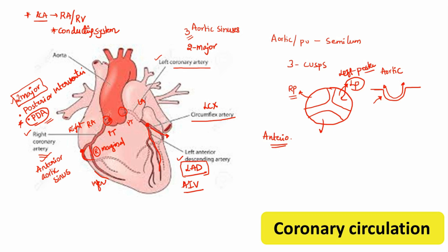The left coronary artery mainly supplies the left atrium and the major part of the left ventricle. Regarding the conducting system, in 40% of cases the sinoatrial (SA) node is supplied by the left coronary artery. Additionally, the left bundle of His — the left branch of the bundle of His — is supplied by the left coronary artery. There are some minor variations, but these are the important points to remember for exams.